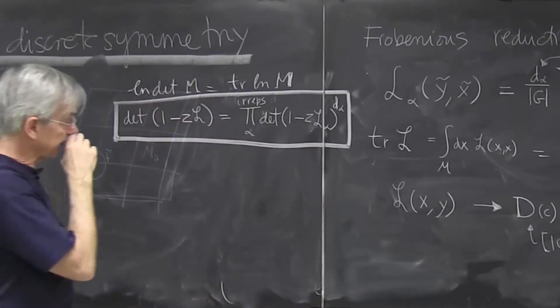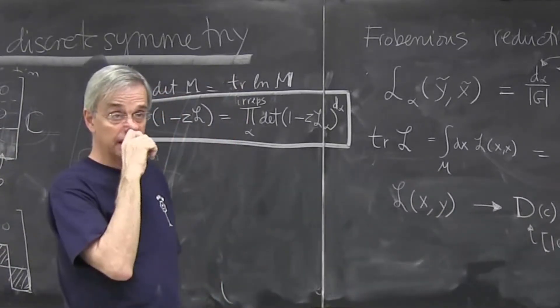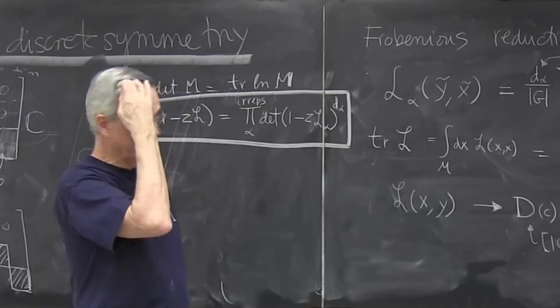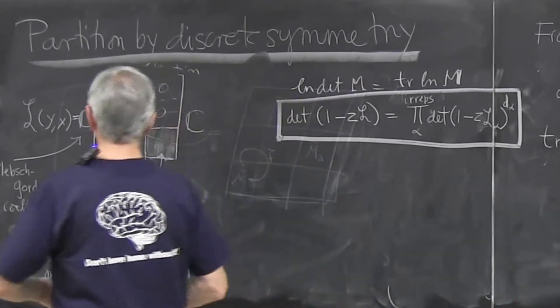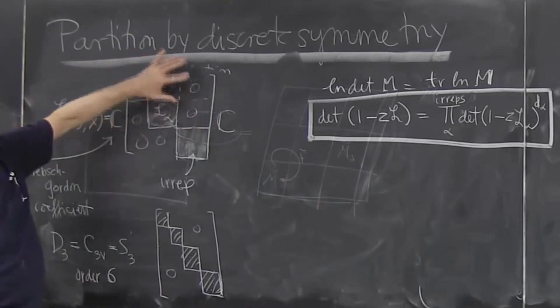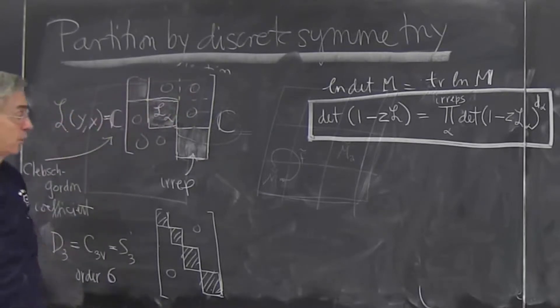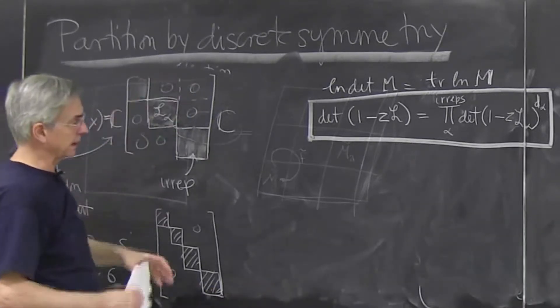The problem with fancy mathematics is that you never know why should you care about it. But this piece of fancy mathematics is extremely useful. In the crudest way you can think that you had something that was very large, and now you put it in smaller blocks. So that obviously will save in computational time. It's much more than that.